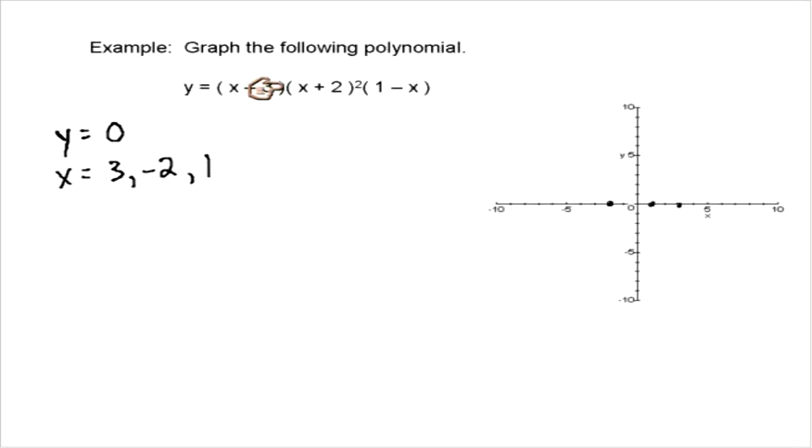The other thing that we can tell just by looking at this is that the root x plus 2 has a multiplicity of 2. So at negative 2, what's going to happen is we're going to have this bounce off. I'm just going to call it bounce, also sometimes called a double root. So there's going to be two terminologies there.